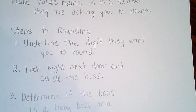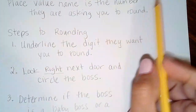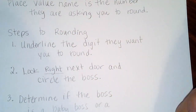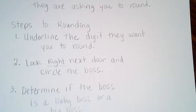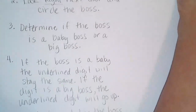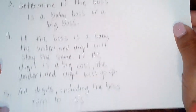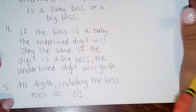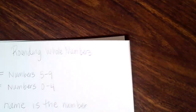Step two: look right next door and circle the boss. Remember, all the bosses are to the right. It might be a baby boss or a big boss, but you circle the digit next to the underlined digit. Step three: determine if the boss is a baby boss or a big boss. Step four: if the boss is a baby boss, the underlined digit stays the same. If the boss is a big boss, the underlined digit goes up. Then all the digits including the boss turn to zeros.